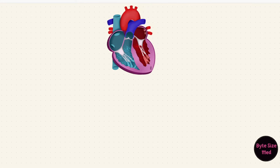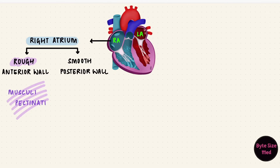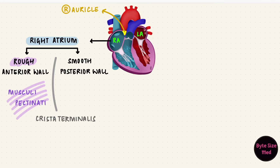There are two atria, the right and the left. The right atrium has a smooth posterior wall and a rough anterior wall. The roughness is because it has Musculi pectinati, which are muscular ridges, as does the right auricle, which is the little ear-shaped projection from the right atrium. The junction between the two parts is marked by a ridge on the inside called the Crista terminalis.